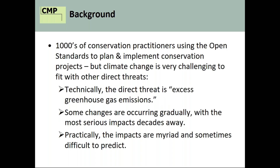For background: there are literally thousands of conservation practitioners using the open standards on conservation projects, but climate change is pretty challenging. Technically the direct threat is excess greenhouse gas emissions, but it's much more complicated. We need to break out the various impacts — some changes are happening gradually, others are a long way away. How do we deal with the fact that some things are changing slowly today but the big changes won't happen for a long time?